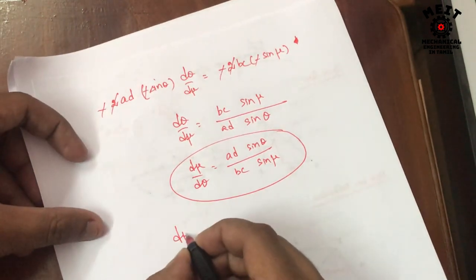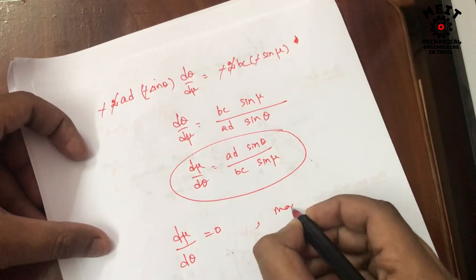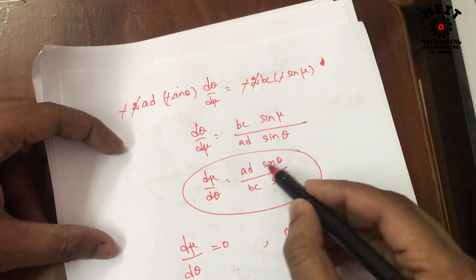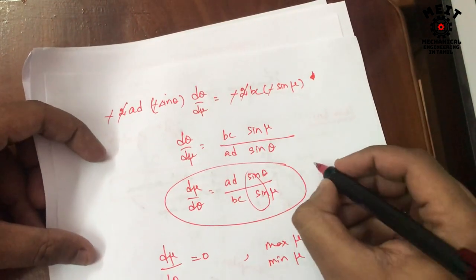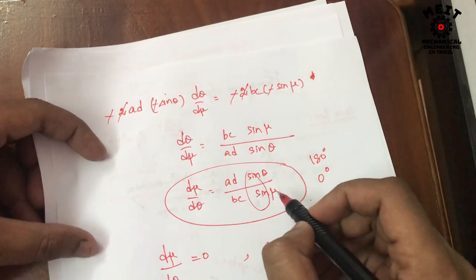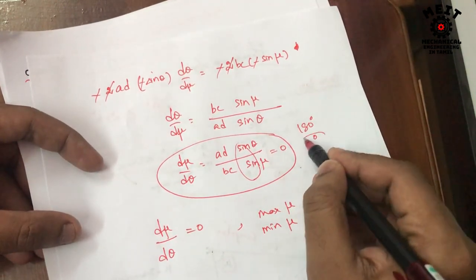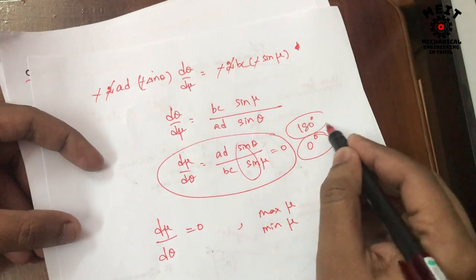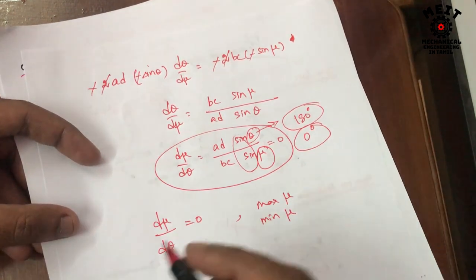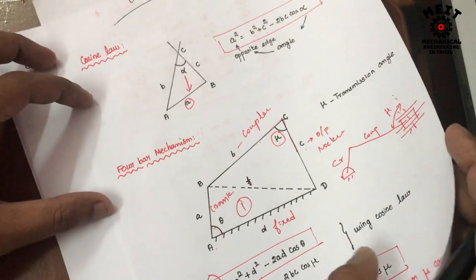When we equate the differentiation of transmission angle to zero, we get the maximum and minimum transmission angles. Since sine equals zero at 0 degrees and 180 degrees, putting theta equal to 0 degrees or 180 degrees gives the entire equation as zero. So only at theta equals 0 degrees and theta equals 180 degrees do we get the maximum and minimum transmission angles. This completes the derivation.